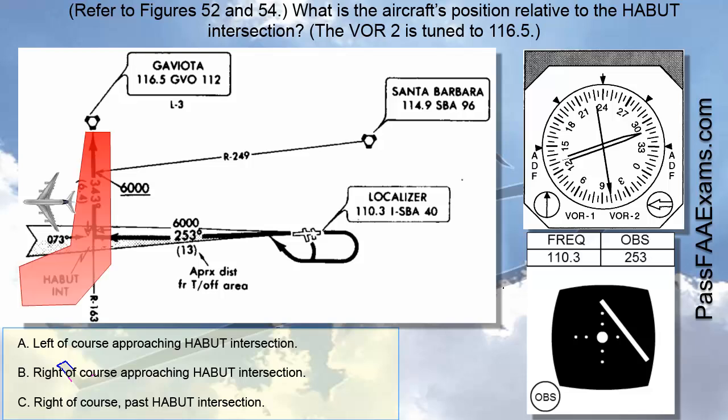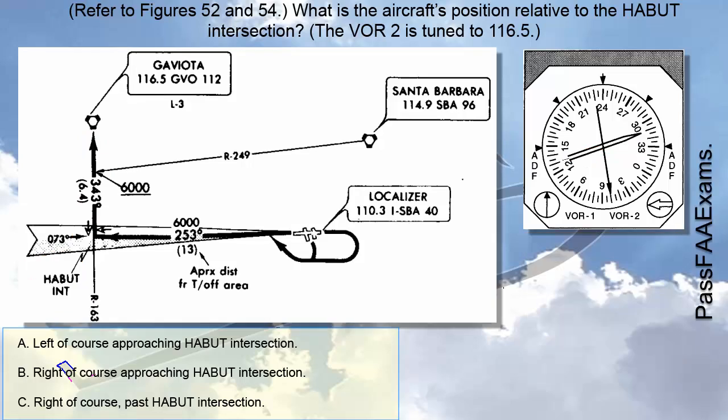For this we will need the radial from the Gaviota VOR and the VOR receiver number 2 of the top figure. So, as I said on the last slide, let's take a look at figure 54 VOR number 2, which will help us determine whether we are past the HABIT intersection or approaching it. If we look at the tail of the VOR number 2, we can see that it's pointing to the 130 radial.